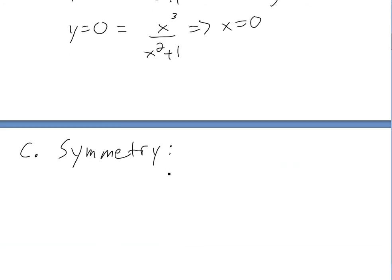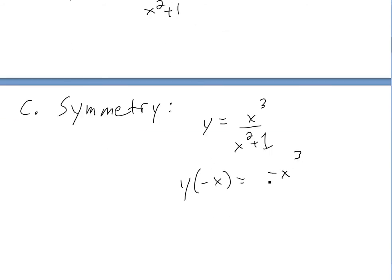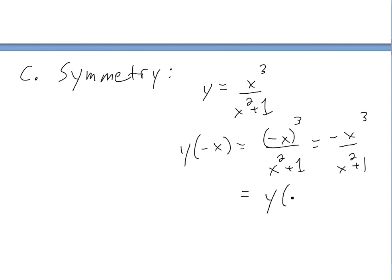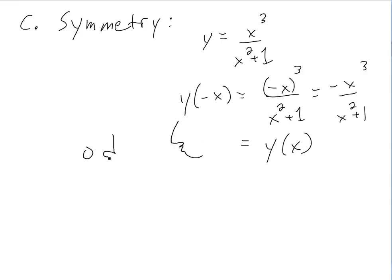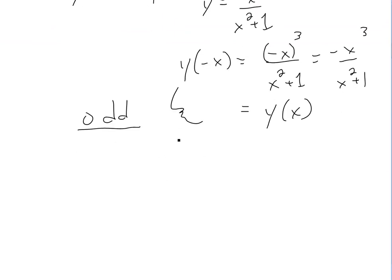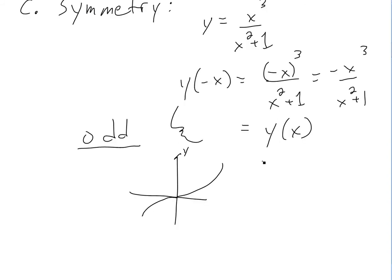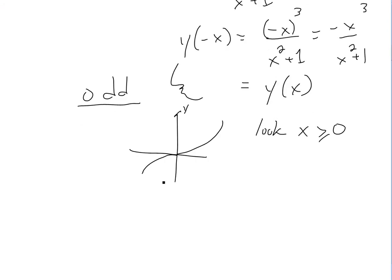Looking at symmetry: the function is x³ over x² + 1. The x² term is always positive regardless of sign, but x³ changes sign. If we evaluate f(−x), we get negative x³ over x² + 1, which equals −f(x). So this is an odd function — it's symmetric about the origin. This means we only need to analyze x ≥ 0 and then reflect it accordingly.